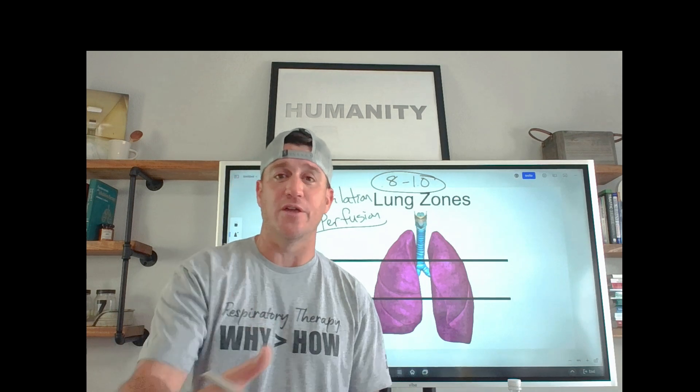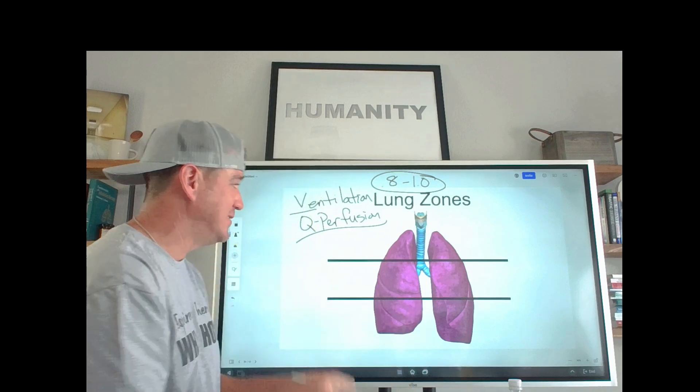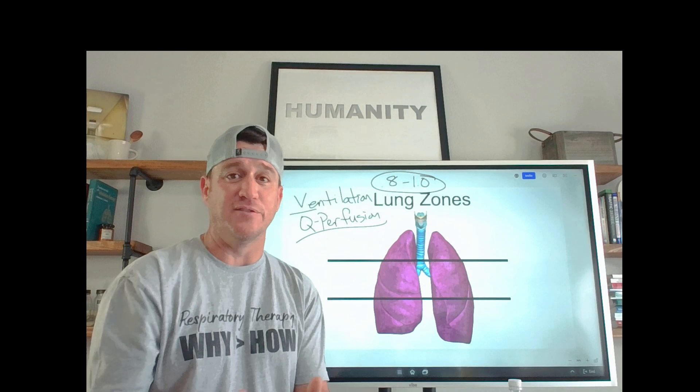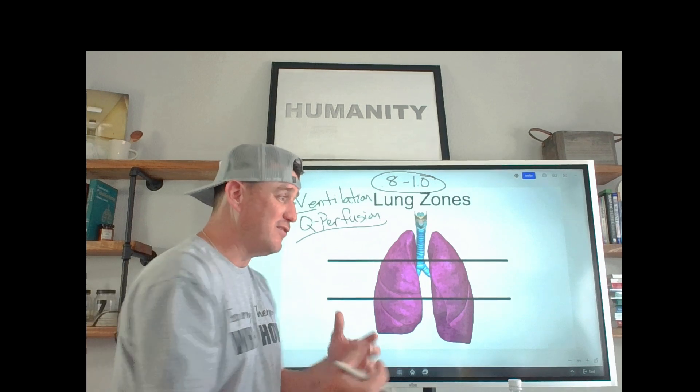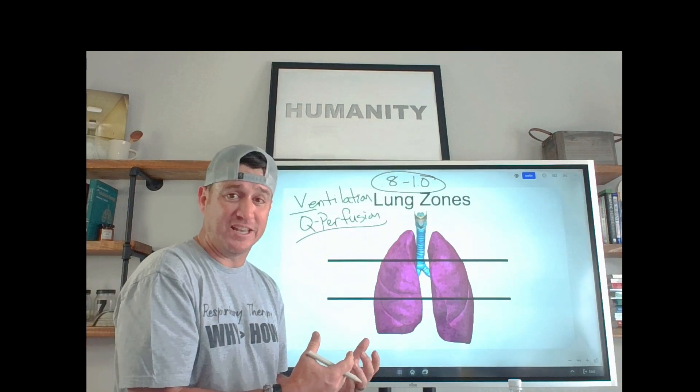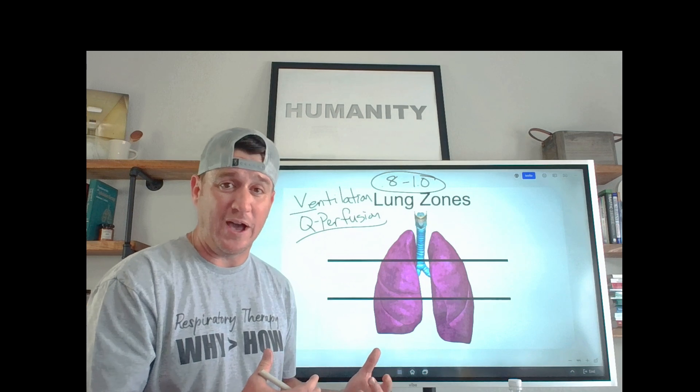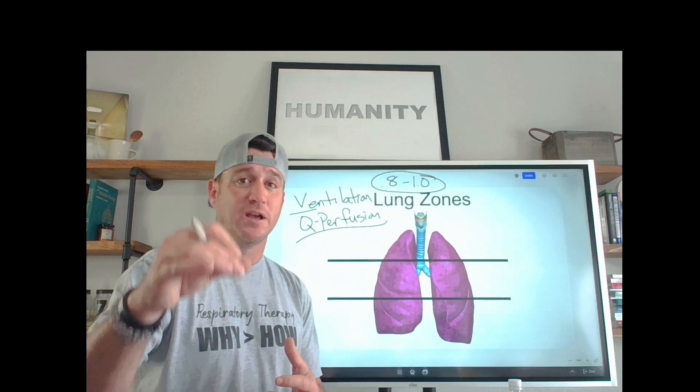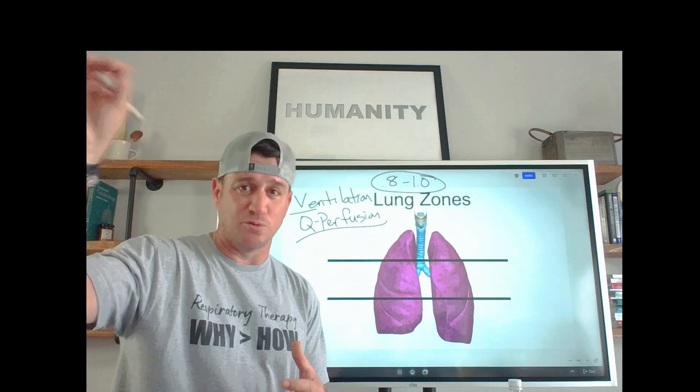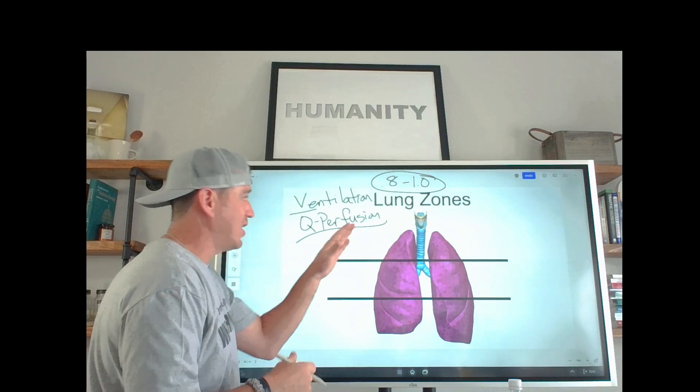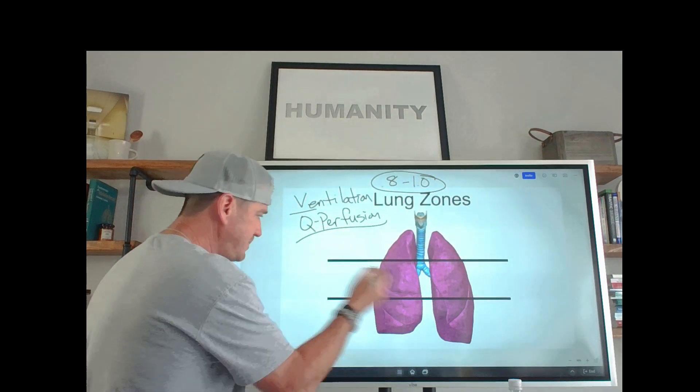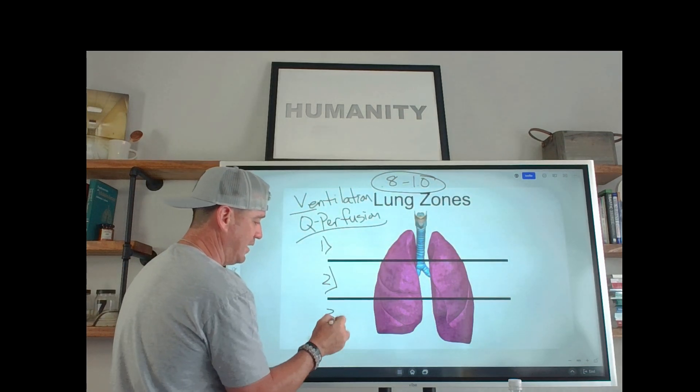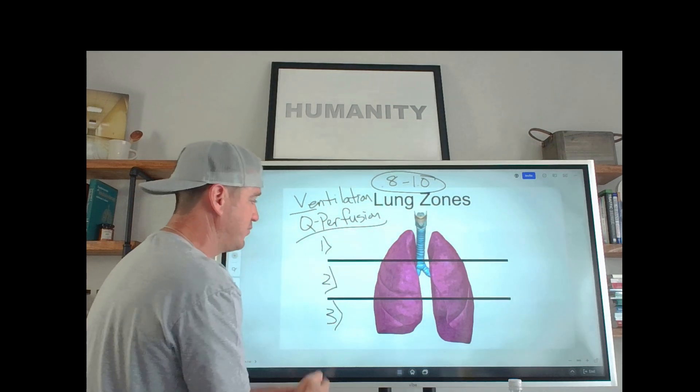Some of them will cause the VQ ratio to decrease, such as pneumonia. That's another video for another day. What we're talking about today is what happens in the normal, healthy, upright individual, because the VQ ratio is a conversation for those individuals as well. And this is the information you need to be an expert above average exceptional respiratory therapist. Now, let's talk about this. When we talk about lung zones, there's three lung zones. There's zone one, zone two, and zone three.